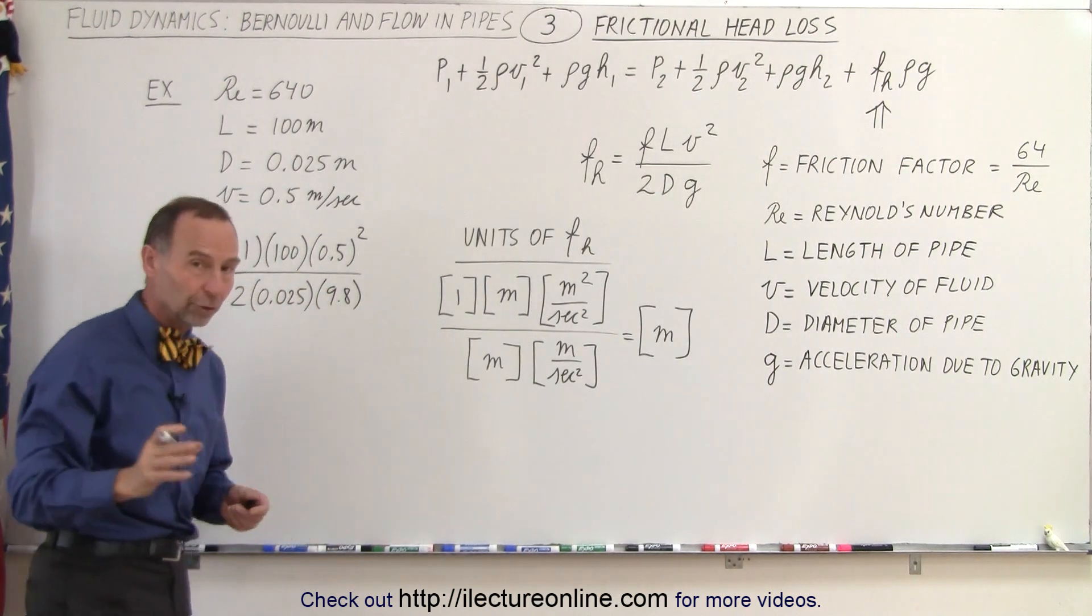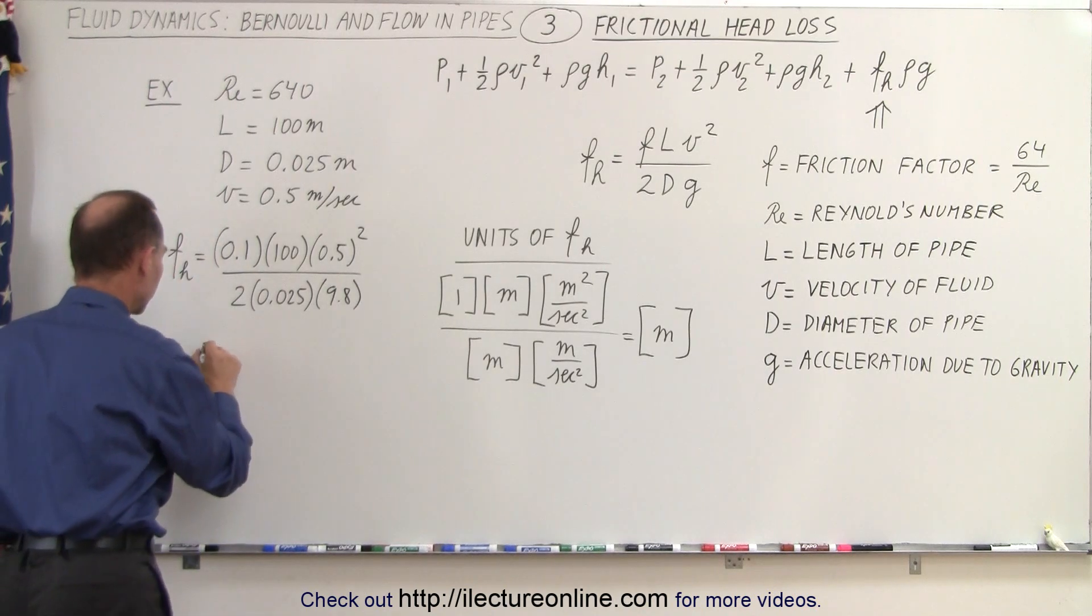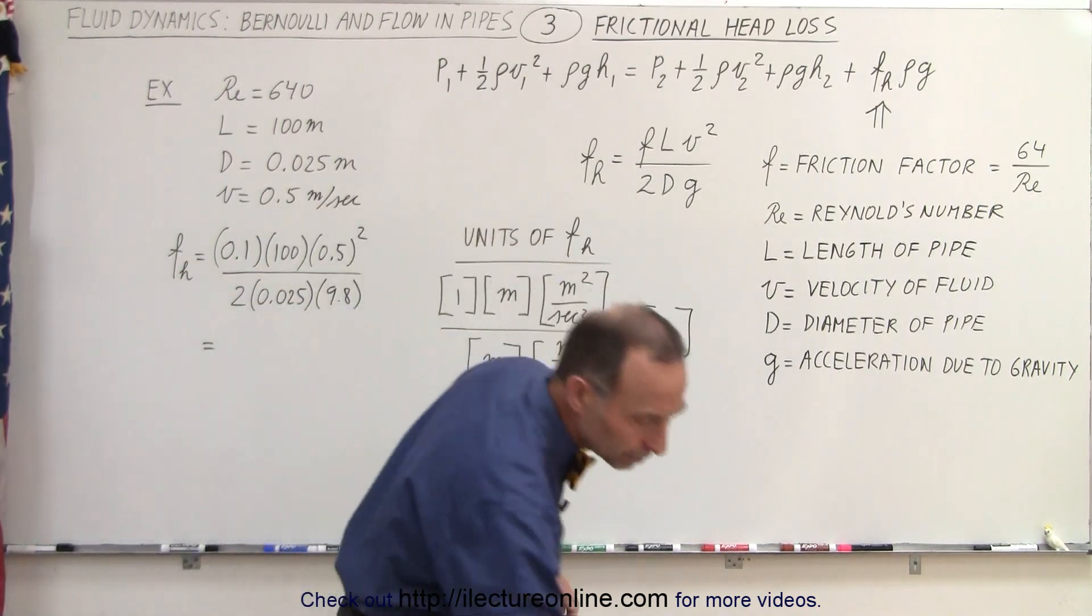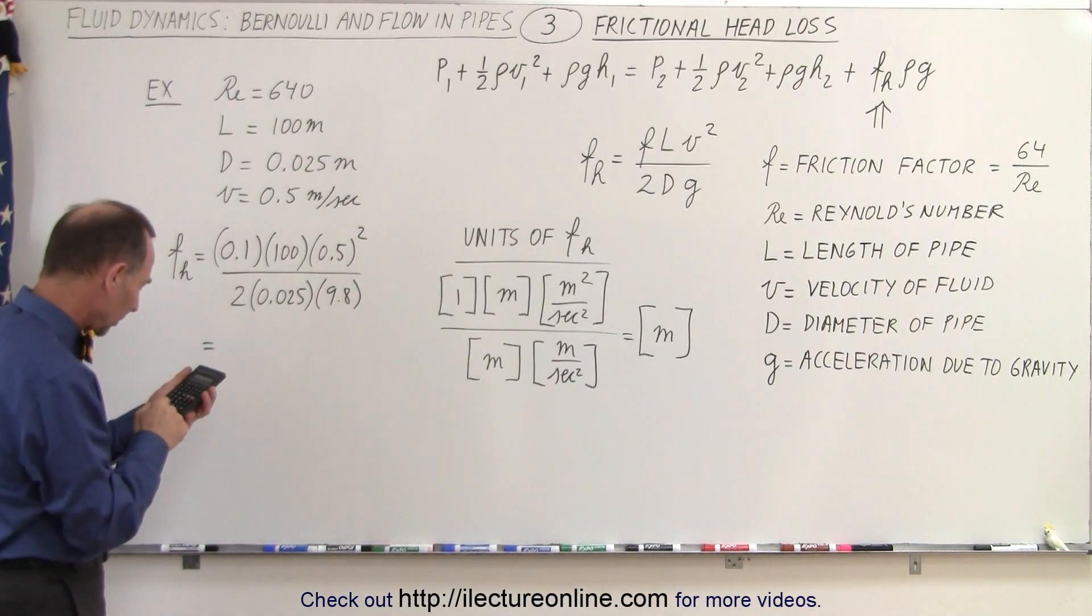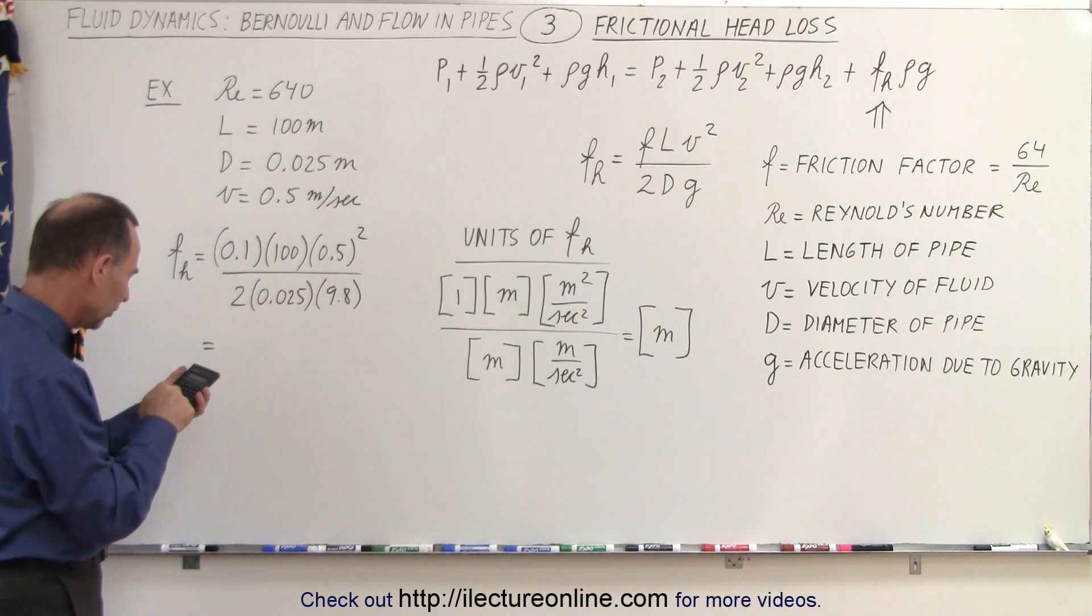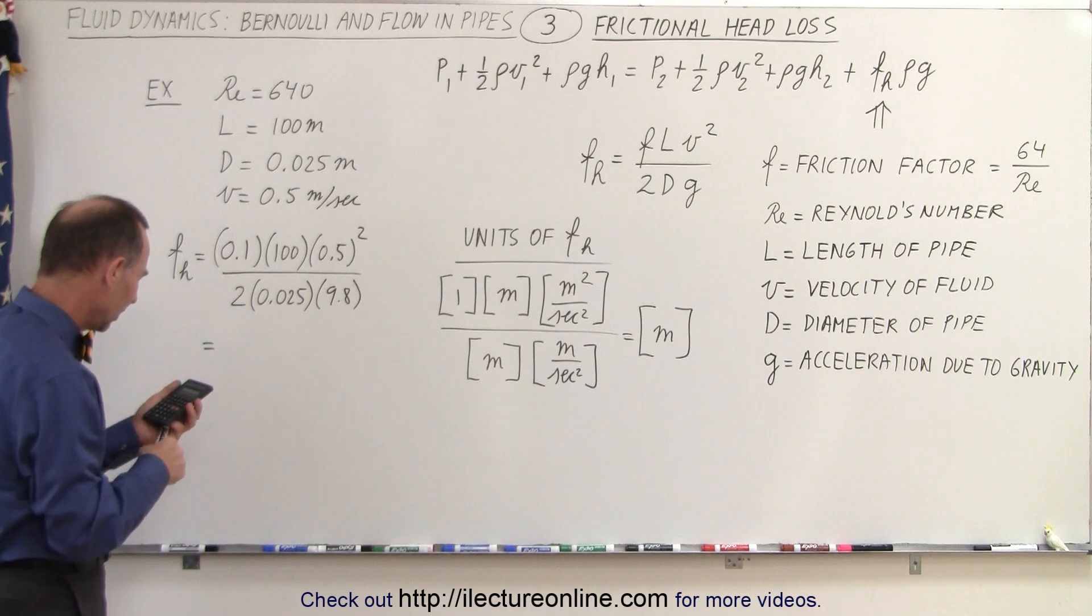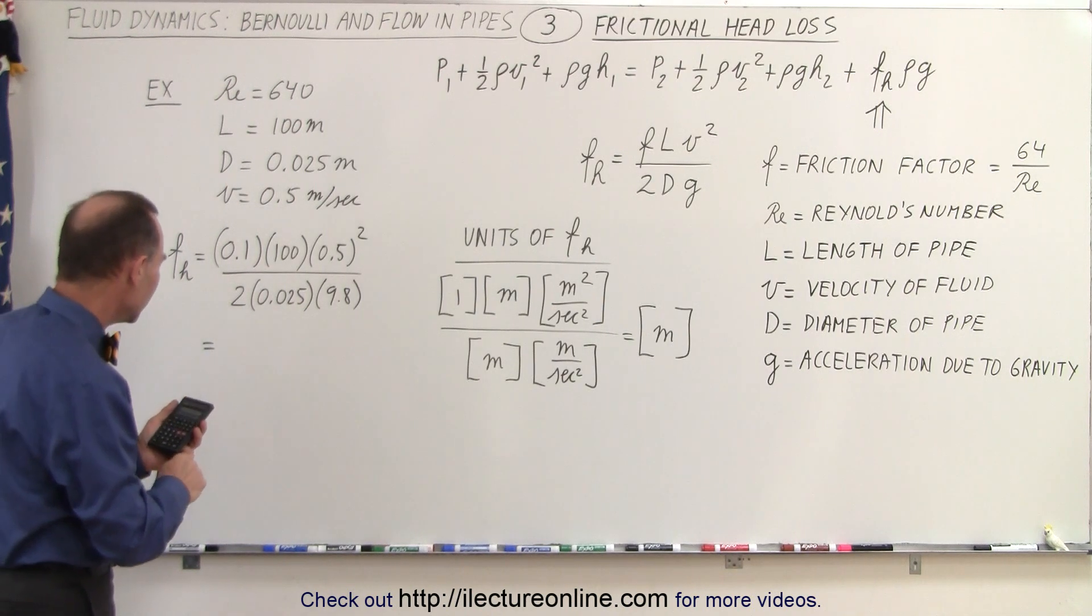And remember, the units are going to be meters. So we have 0.1 times 100, that would be 10 times 0.5 squared, divided by 2, divided by 0.025, divided by 9.8, and we get 5.1 meters.